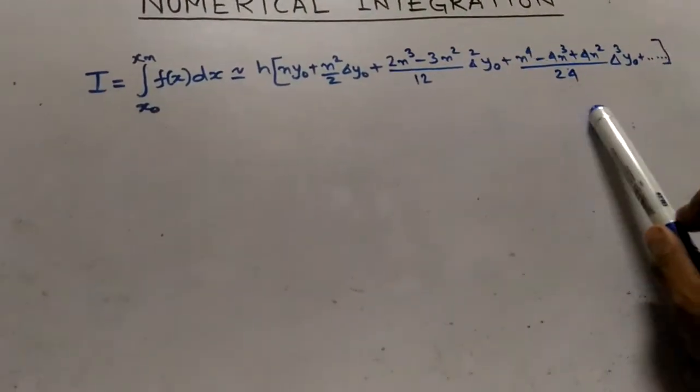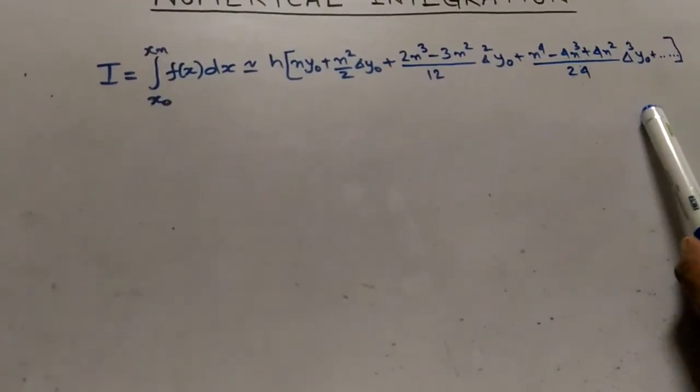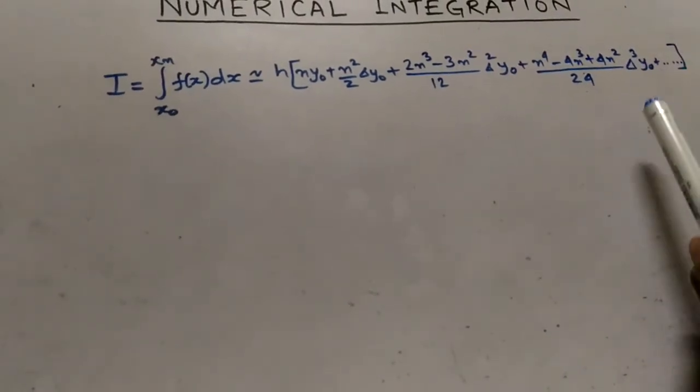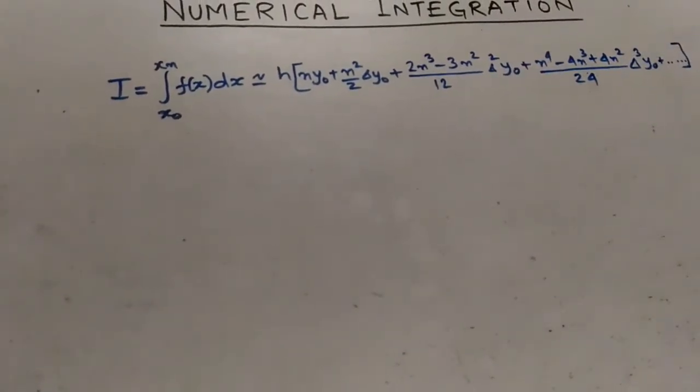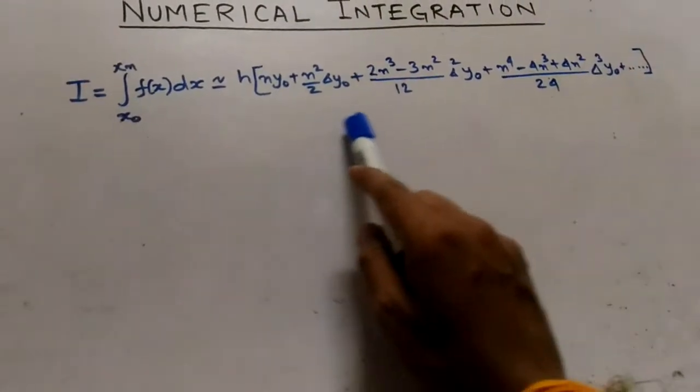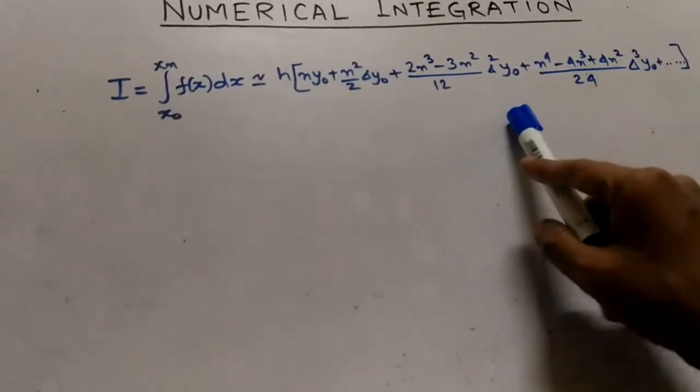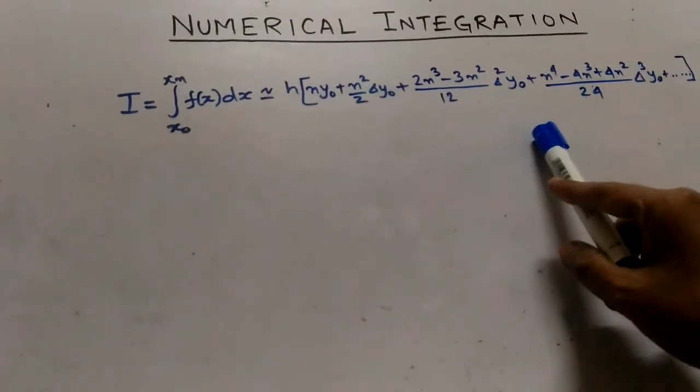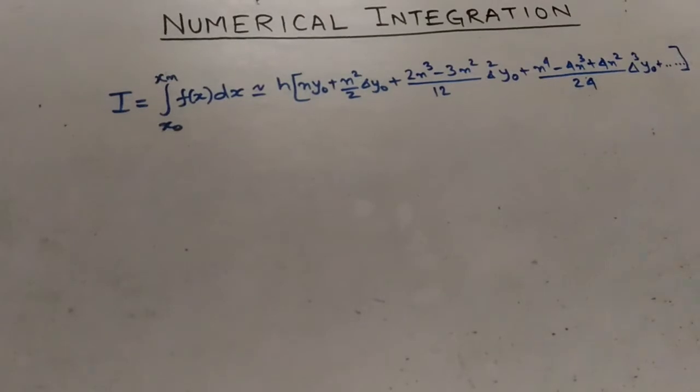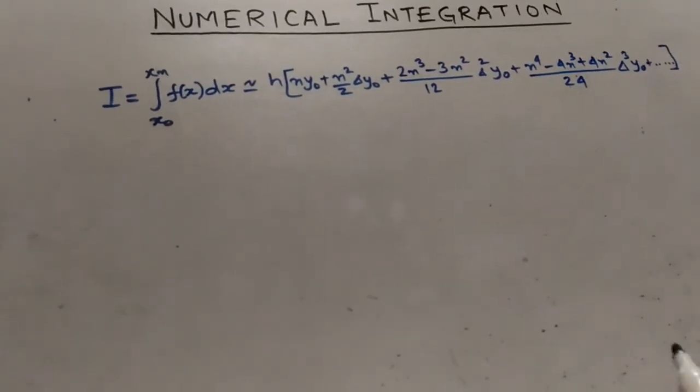In the previous video, I had put n equals to 1 in the general quadrature formula and obtained the trapezoidal rule. Now in this video, I will put n equals to 2.